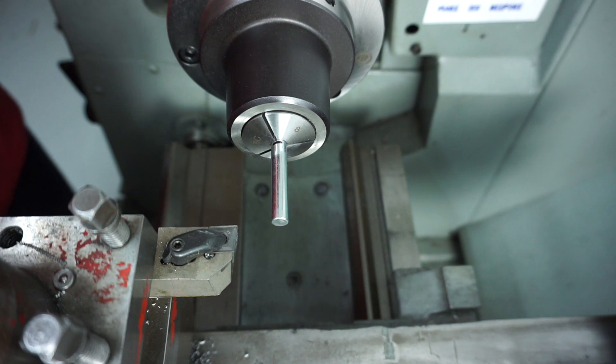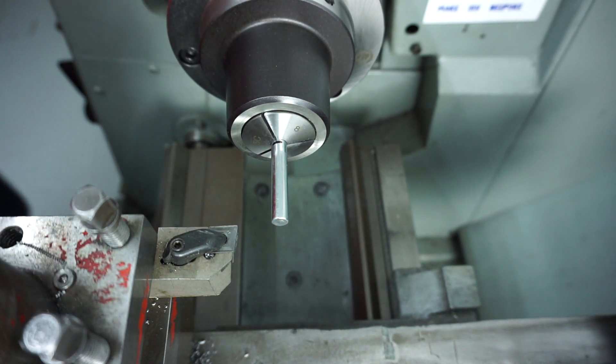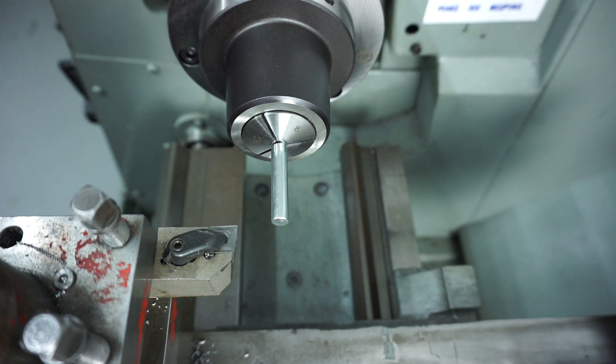I've got my Bison collet chuck here with a 5C collet in it to hold it. These studs are about eight millimeters in diameter and I'm holding it roughly at about two inches, so 50 millimeters out from the collet, and I'm just going to slightly work away at it and get it down to size. It's currently at eight millimeters, I need to get it down to six millimeters, which is shy of a quarter of an inch.